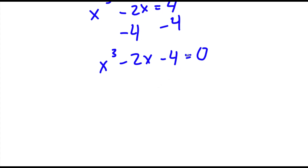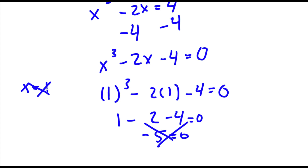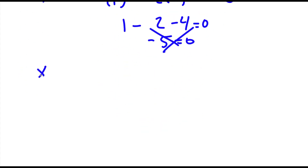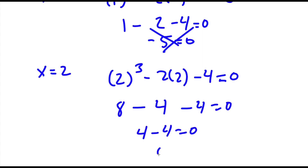Now we have to test out possible solutions. All we need to do is find one solution and then we can find the rest. Let's first try x equals 1. If x equals 1, then we have 1 to the power of 3 minus 2 times 1 minus 4 equals 0. 1 to the power of 3 is 1, so 1 minus 2 is negative 1, negative 1 minus 4 is negative 5. So negative 5 does not equal 0 — x does not equal 1. Now I'll try x equals 2: 2 to the power of 3 minus 2 times 2 minus 4 equals 0. 2 to the power of 3 is 8, minus 4 minus 4 equals 0. 8 minus 4 is 4, and 4 minus 4 is 0. So 0 equals 0 — this is correct, so x minus 2 is a solution.